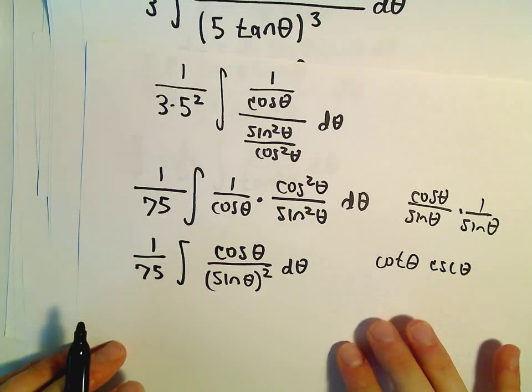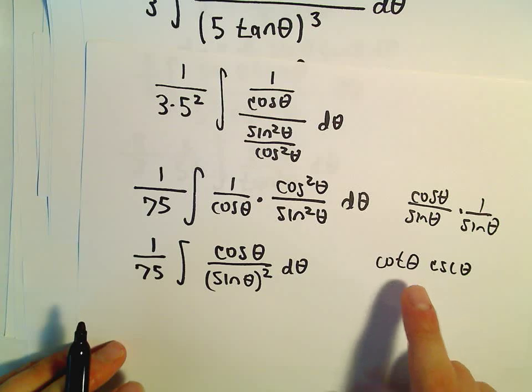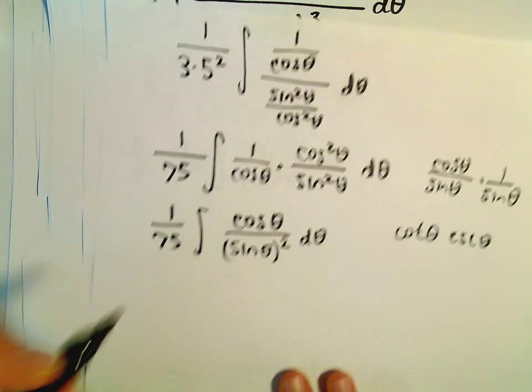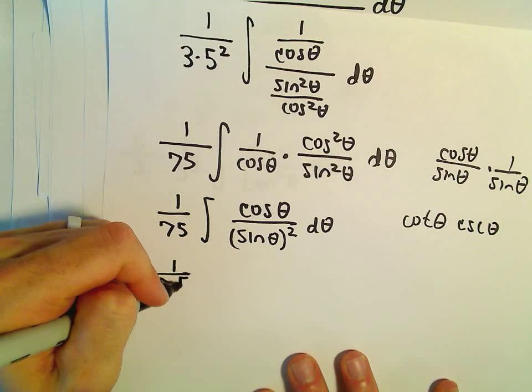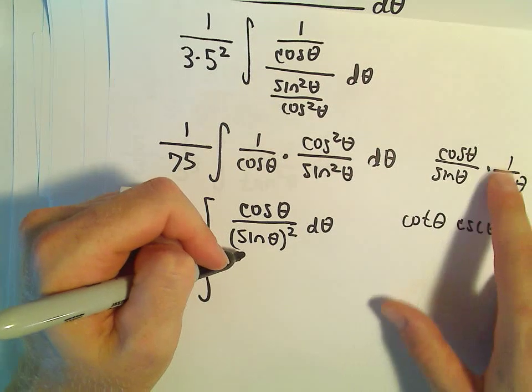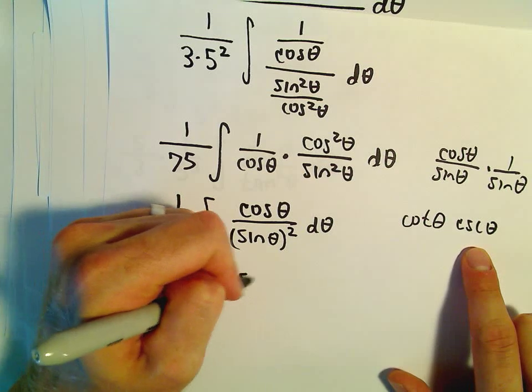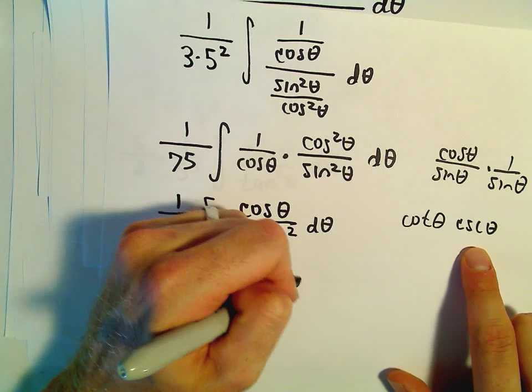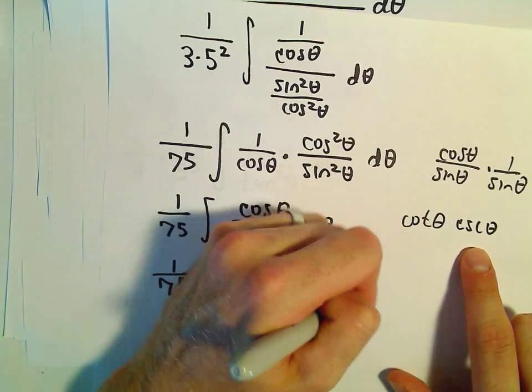So I think we know a nice little anti-derivative immediately for this, right? So the derivative of secant is secant tangent. The derivative of cosecant is negative cosecant cotangent. So that's almost what we need. So let's see. So again, we could break this up as cosine over sine times 1 over sine. So I'm going to write this as cosecant theta times cotangent theta d theta.